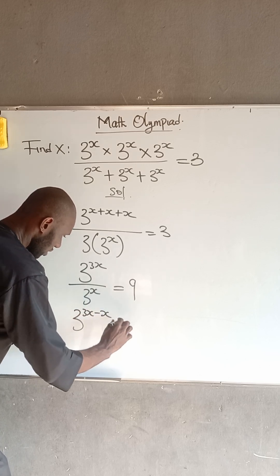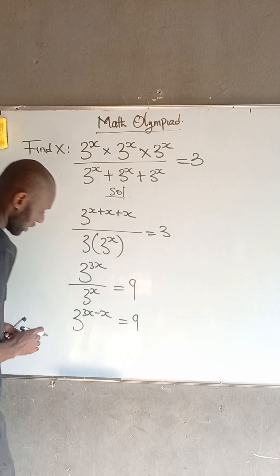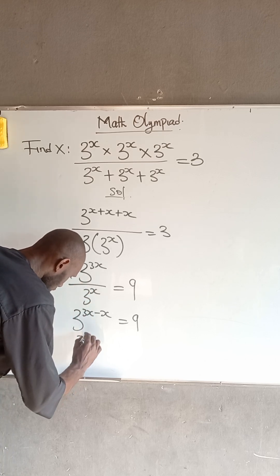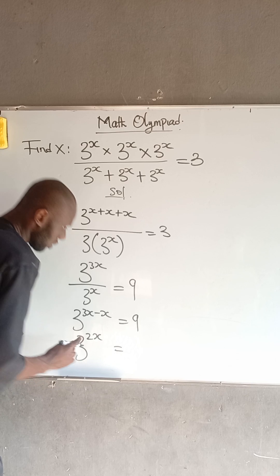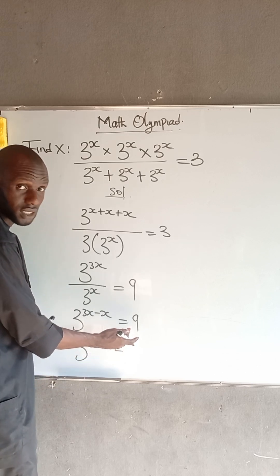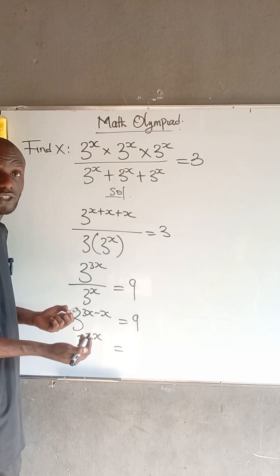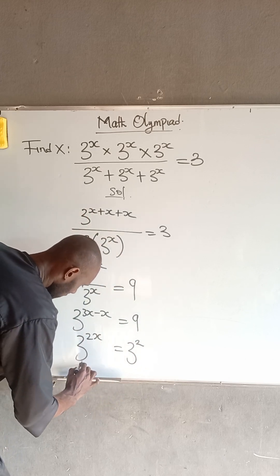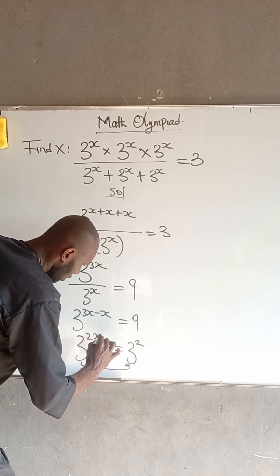At this point, 3x minus x is 2x, so we have 3 to the power of 2x equal to 9. Also, 3 squared is 9, so we can express 9 as a power of 3. Now we have 3 to the power of 2x equal to 3 squared. Since their bases are the same, we can equate their powers.